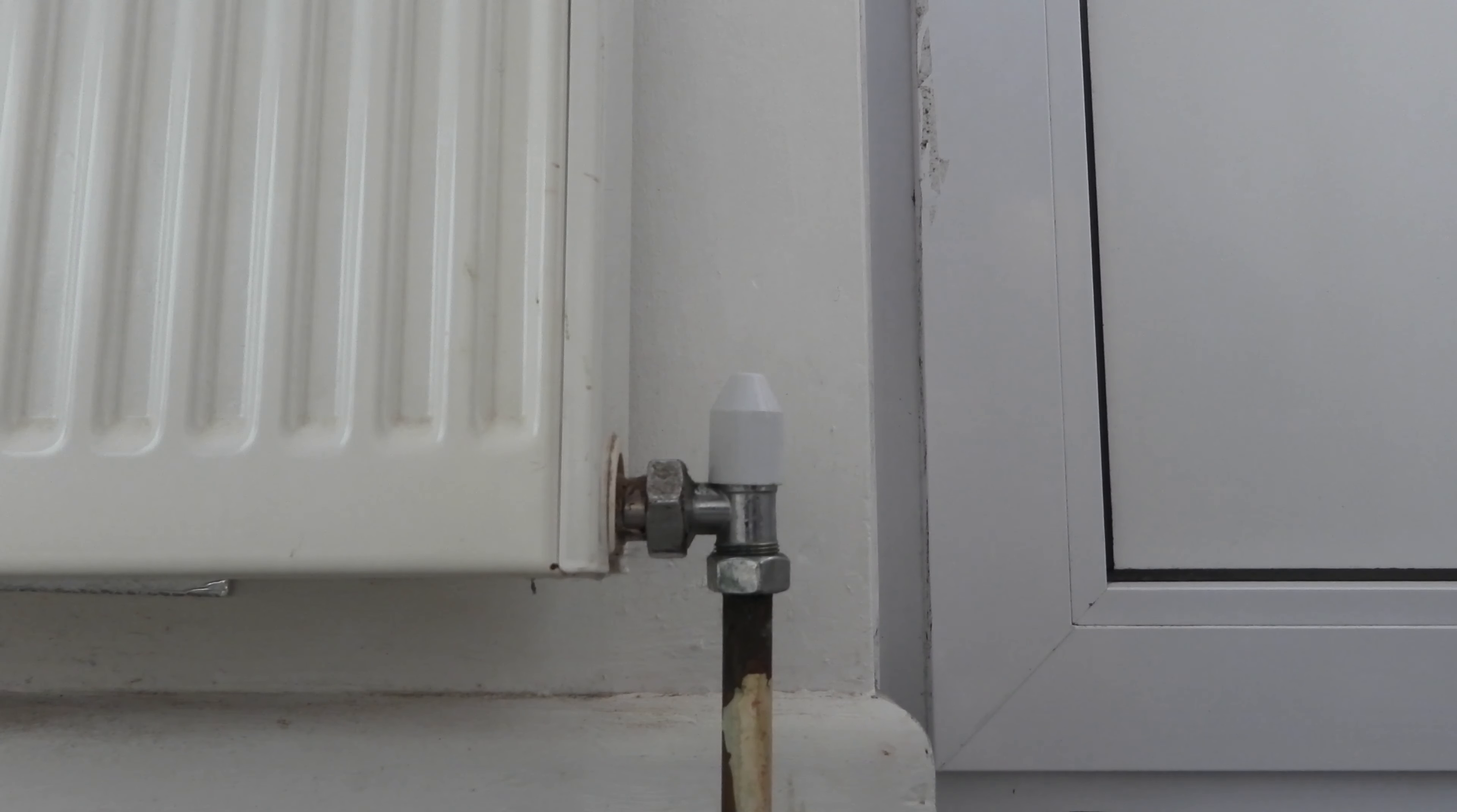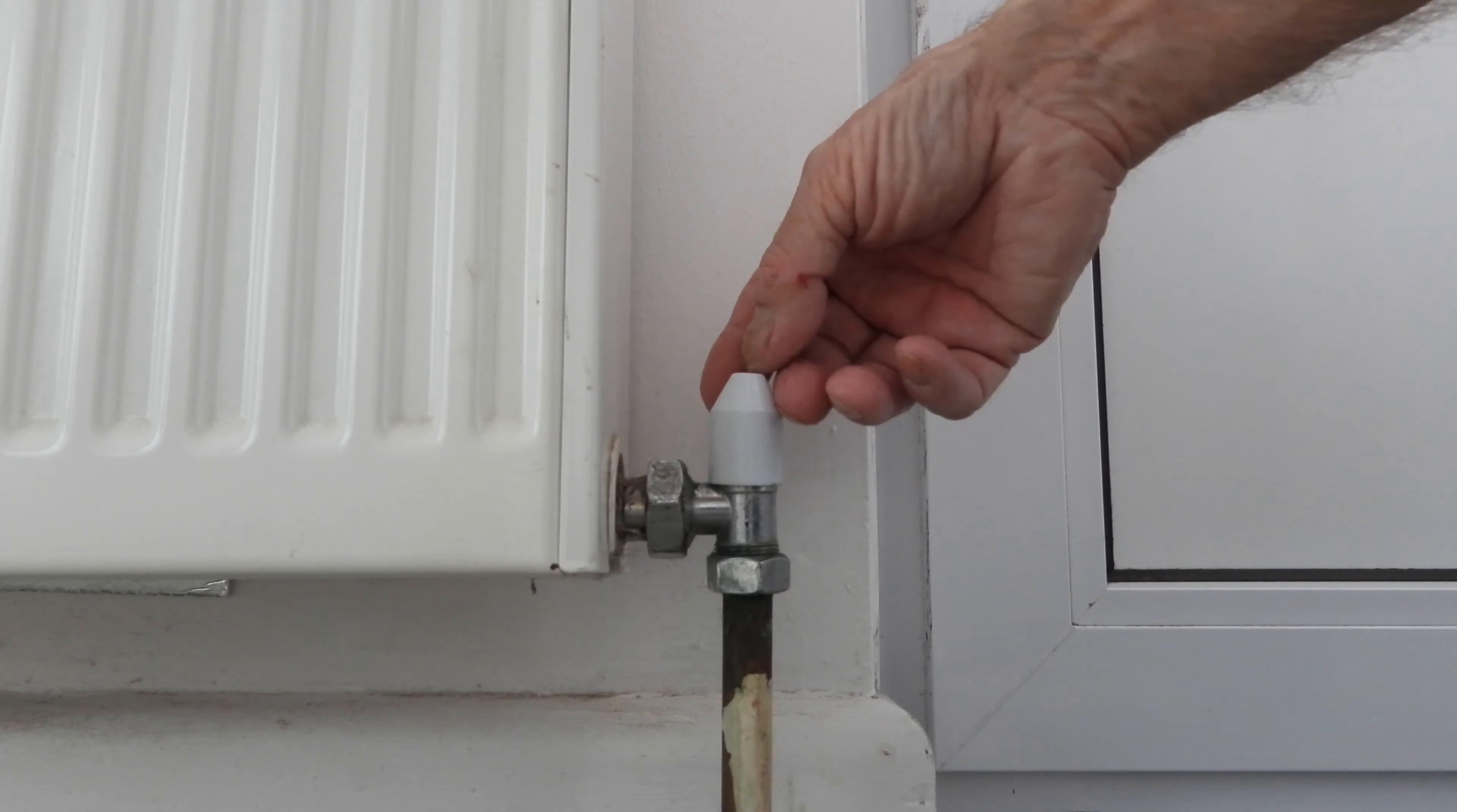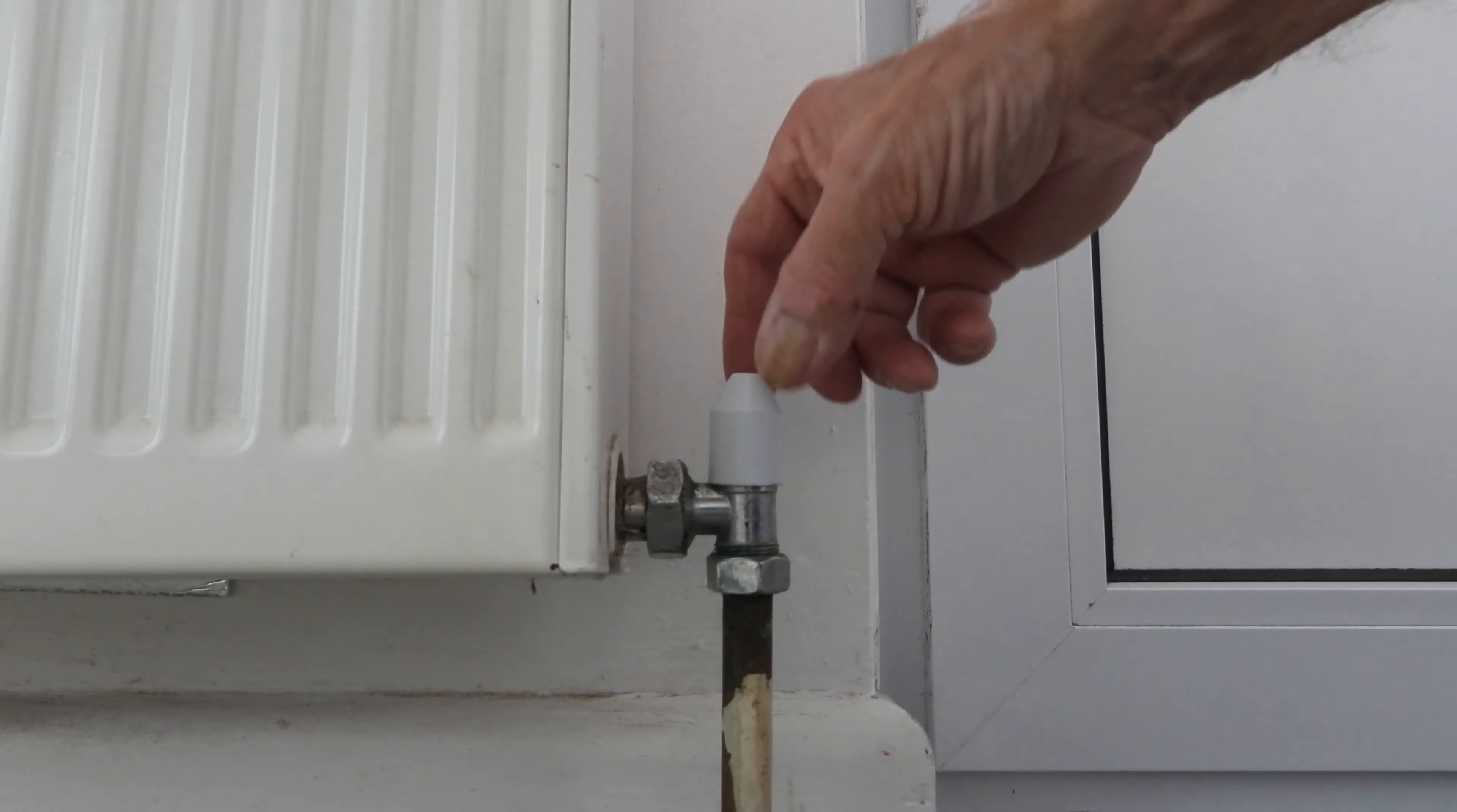On the other end of your radiator you'll have what we call a lockshield valve. It'll either have a cap on it like this one with no screw, or you'll have a cap with a screw in it. If it's got a screw, just undo it with a screwdriver, take it out, and then you can pull the push-on one off.